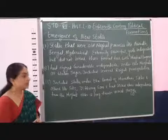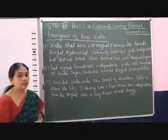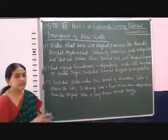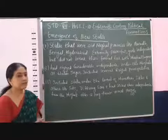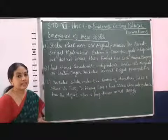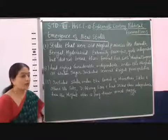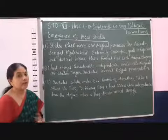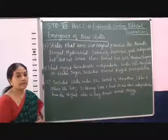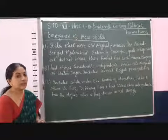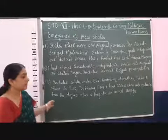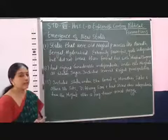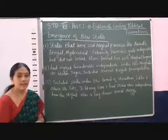The third group included states that were under the control of the Marathas, Sikhs, and others like Jagirdars. All these states were of different sizes — some were big, some were small — but all of them had become independent through military confrontations with the Mughal Emperors, ceasing their independence after a long drawn-out armed struggle.